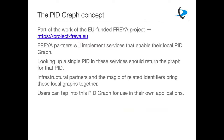This is part of our work on the EU-funded project FREA. The various FREA partners — of which DataCite is one — will implement services that enable their own local PID Graph for the PIDs they hold and have access to. Looking up a single PID in those services should return the graph for that PID — all the things it's related to. The various infrastructural partners like DataCite, through the magic of related identifiers in the metadata, can help bring all these local graphs together. External users can then tap into that PID Graph to use in their own applications. This is a federated system of multiple PID Graphs all coming together.